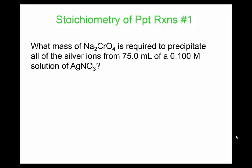So this question says, what mass of sodium chromate is required to precipitate all the silver ions from 75 milliliters of a 0.1 molar sample? So first of all we need a balanced reaction. So that's step one and this problem is nice enough to give us the compounds already. So these are our starting compounds, Na₂CrO₄ plus AgNO₃.